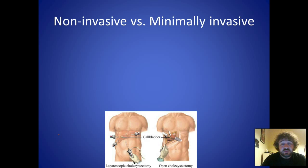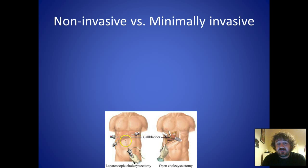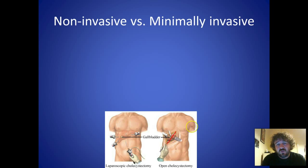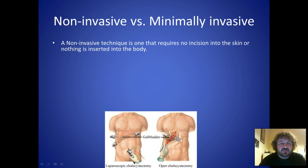For example, with a gallbladder removal using minimally invasive surgery, we make four very small incisions, each about the size of a two dollar coin. Whereas with traditional open surgery, a rather large cut is made through four or so layers of tissue, which is quite destructive and results in a very long healing time.